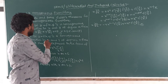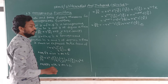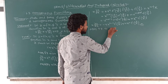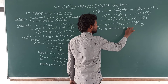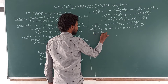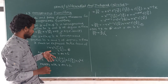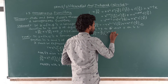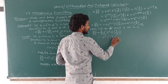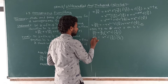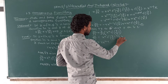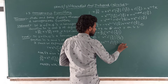Now apply partial derivative with respect to y on the function z = x^n · f(y/x). With respect to y, x^n is constant, so ∂z/∂y = x^n · f'(y/x) · (1/x). We need y·∂z/∂y, so multiply by y: y·∂z/∂y = y·x^(n−1) · f'(y/x). This is equation number 3.